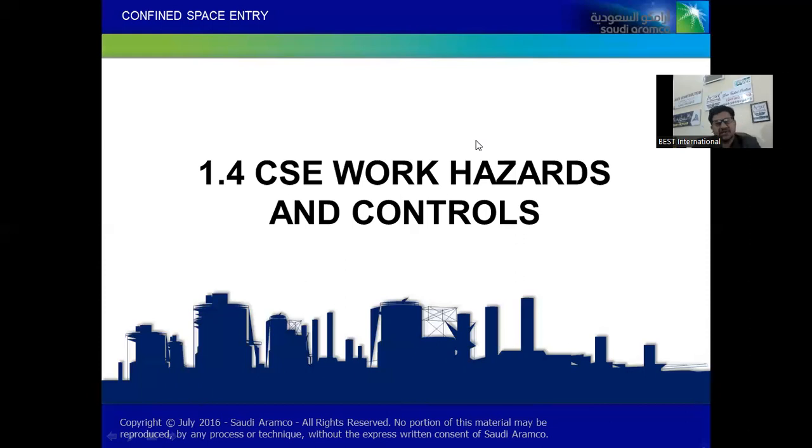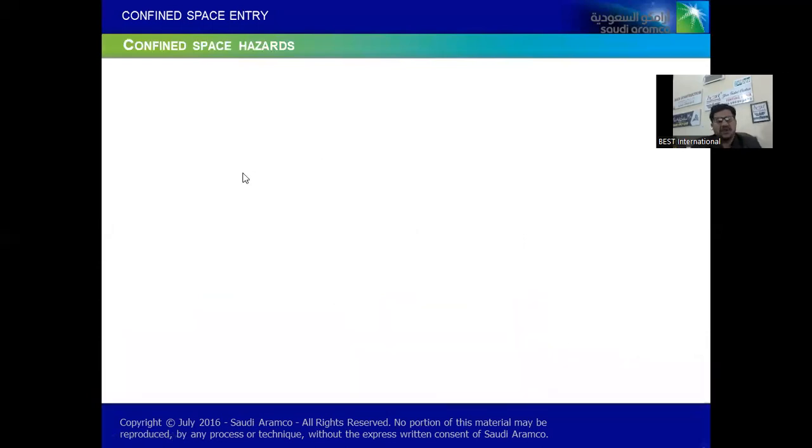The most important thing is to identify the hazards and implement some protective controls before we even start a project and work safely before, during, and after. We all know any process in the world has three stages, so for all three stages we must follow safety rules and regulations, especially for confined space entry management.